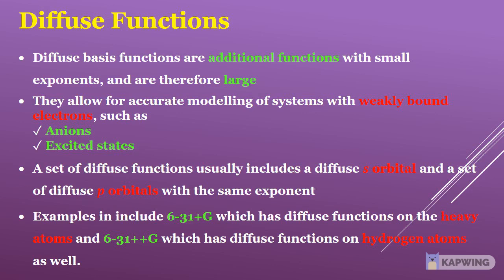Diffuse basis functions are additional functions with small exponents and are therefore spatially large. They allow for accurate modeling of systems with weakly bound electrons such as anions and excited states. A set of diffuse functions usually includes a diffuse s orbital and a set of diffuse p orbitals with the same exponent. Examples include 6-31+G which has diffuse functions on the heavy atoms, and 6-31++G which has diffuse functions on hydrogen atoms as well.